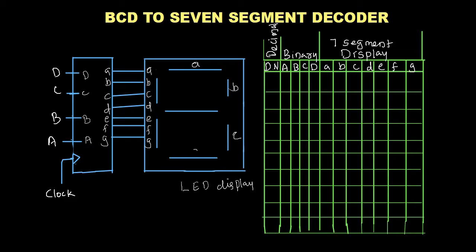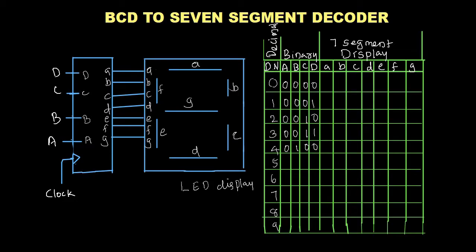Now we are writing the truth table. In this table we write the decimal numbers 0 through 9 and their binary equivalents. 0 is 0000, 1 is 0001, 2 is 0010, 3 is 0011, 4 is 0100, 5 is 0101, 6 is 0110, 7 is 0111, 8 is 1000, and 9 is 1001.